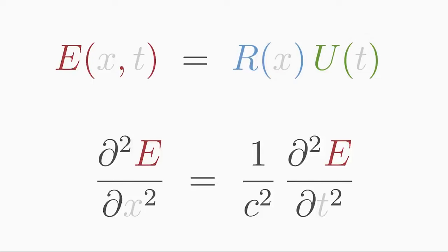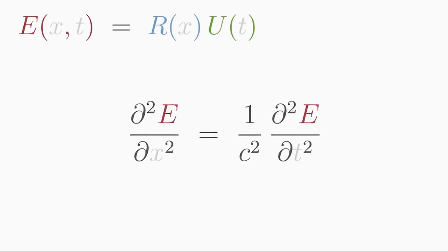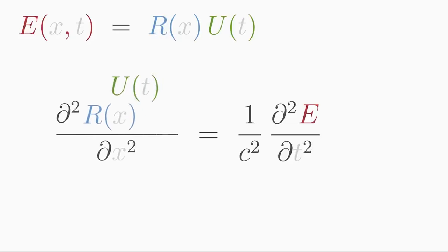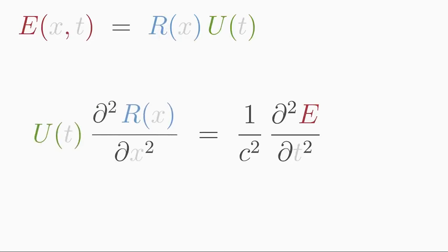In the wave equation we have a second derivative of E with respect to location x and a second derivative with respect to time t. Differentiating the product ansatz with respect to x yields u times the second derivative of r with respect to x, since u is independent of x and thus acts like a constant.